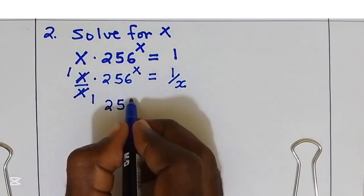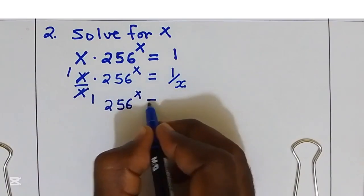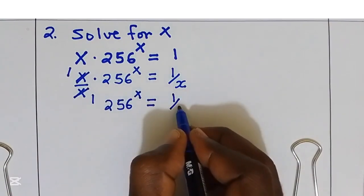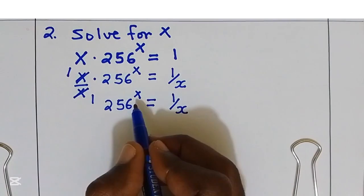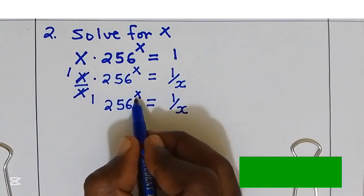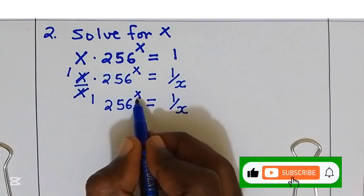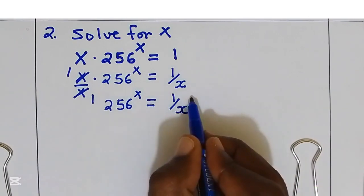By x, we get 1. 256 power x, this is equal to 1 over x. I want to remove this power of x on the left hand side, so I'm going to multiply by the power of 1 over x on both sides.